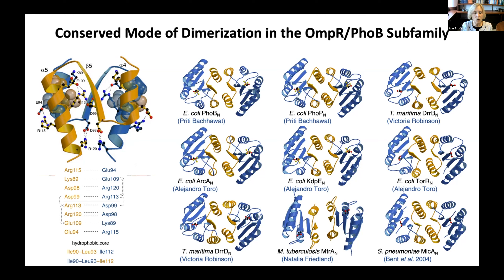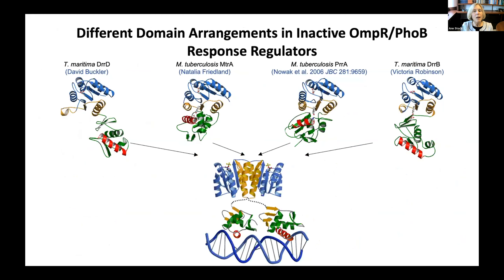Despite the sequence conservation, however, the molecular surfaces of different response regulators are distinct, owing to sequence variations in second-shell residues. In a genomic-scale examination of the 14 OmpR/PhoB family members present in E. coli, we found a high degree of discrimination for formation of homodimers rather than heterodimers. Although the mode of dimerization in the active state is conserved for OmpR/PhoB family members, the domain arrangements observed in the inactive proteins all differ. Some have no interface between domains; others have tight interfaces, some of which position the recognition helices at the domain interface, ensuring that the protein is really in a locked off state.